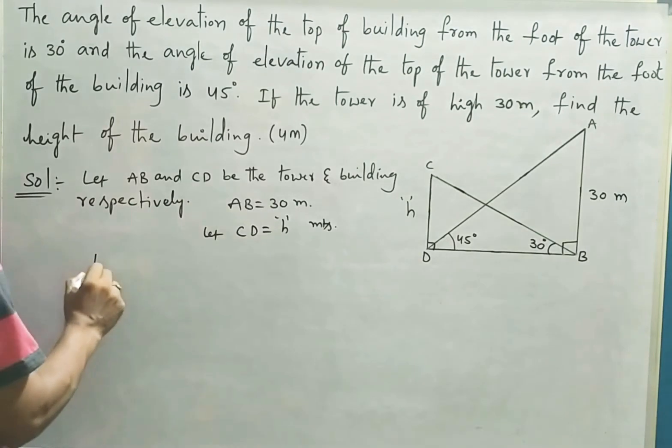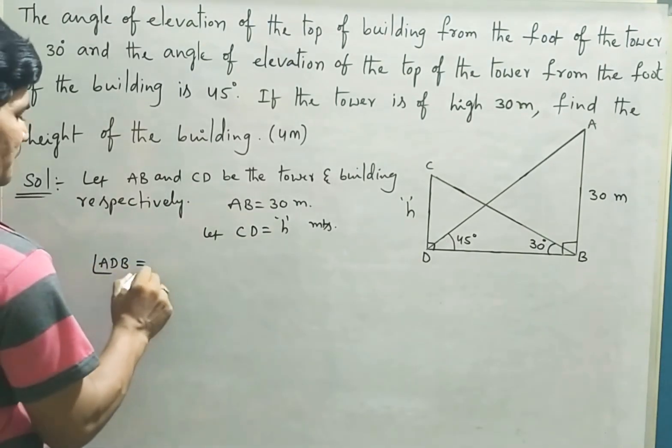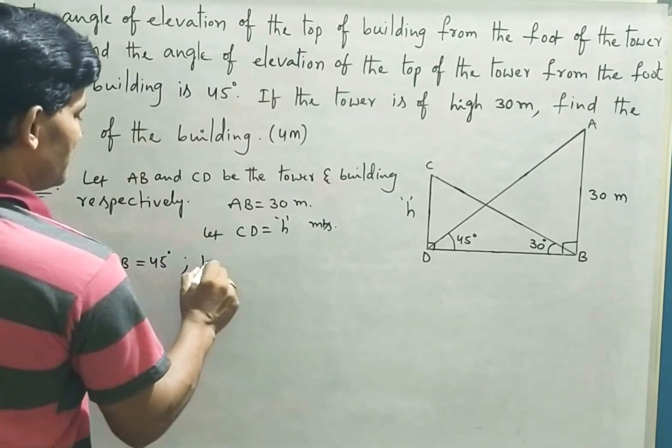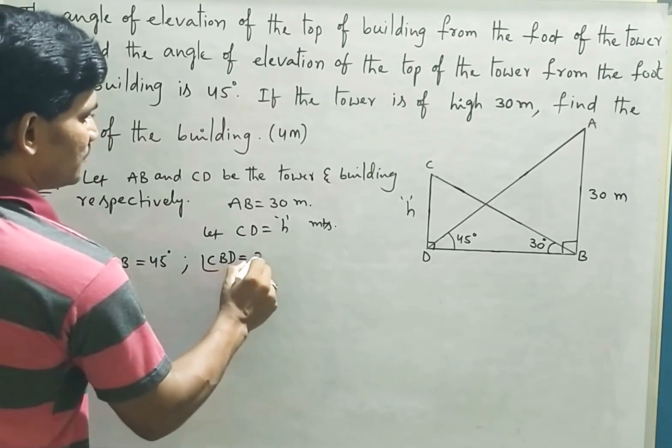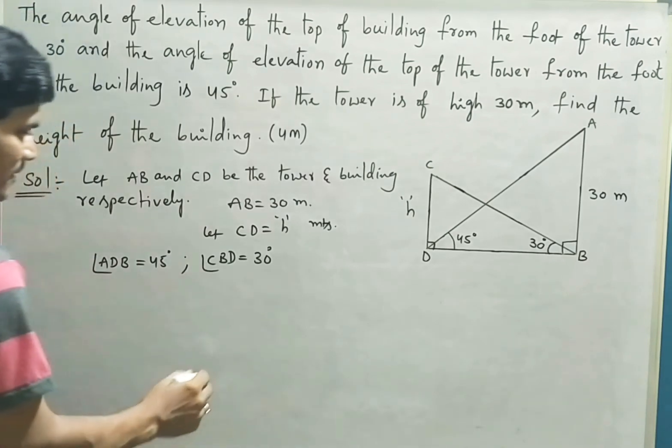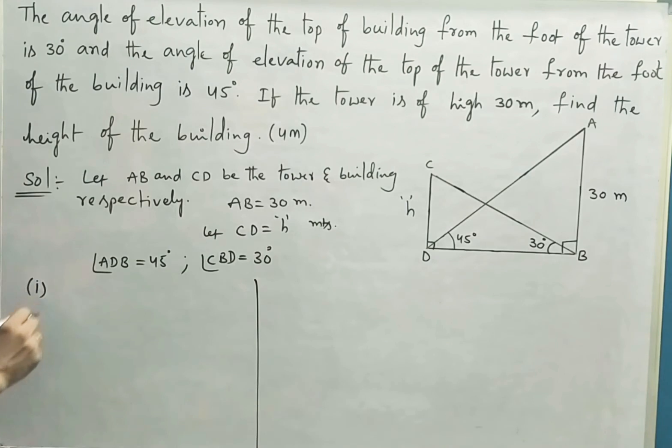Angle ADB, the angle of elevation of the top of the tower, is 45 degrees, and angle CBD is equal to 30 degrees. This is the angle of elevation of the top of the building. Now, simply, we have to take the tan ratio in two right triangles.